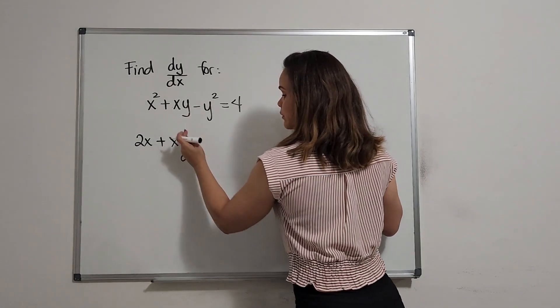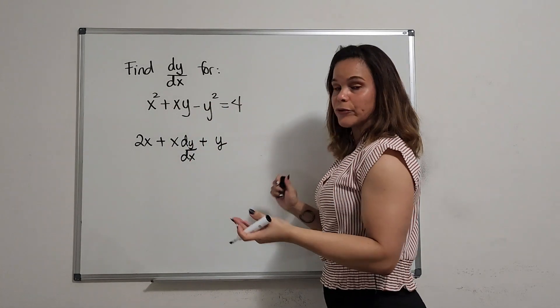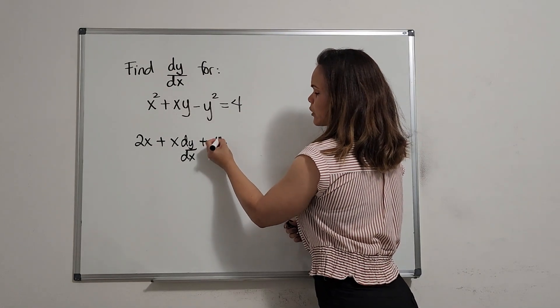So the first times the derivative of the second, plus the second times the derivative of the first, x, and the derivative of x is 1. So there's no need to write the 1 here, so we can write this y.